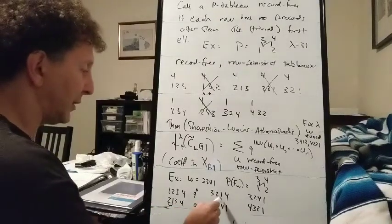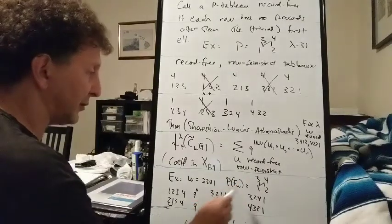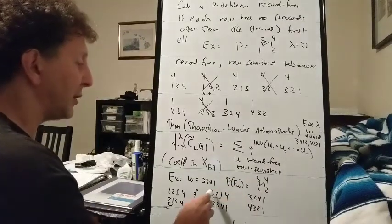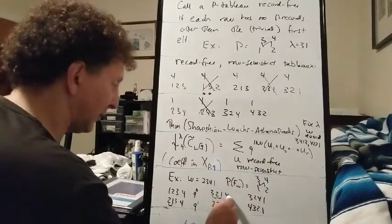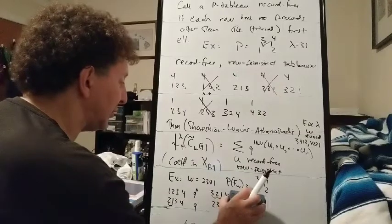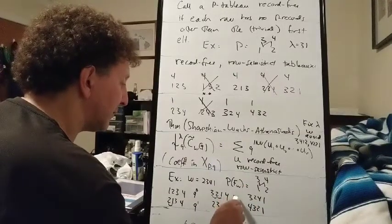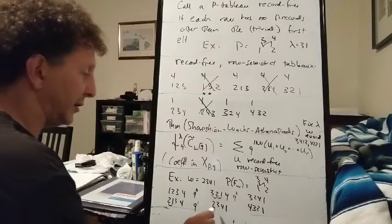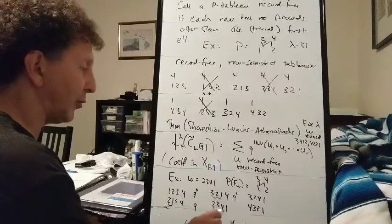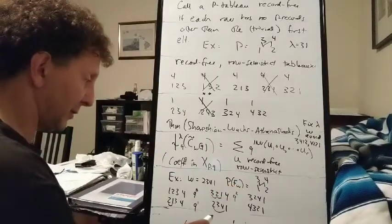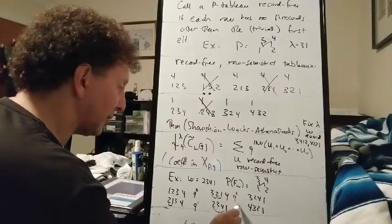Here we've got 2, 1 again. 3, 2. 3, 2 counts because 3 and 2 are incomparable. 3, 1 is potentially an inversion but 3 is greater than 1 in the poset so it doesn't count. So we have Q squared for this tableau. Here, 2 and 1 again. 3 and 1 doesn't count. 4 and 1 doesn't count because those are both greater than 1. So I guess that's just one inversion again.